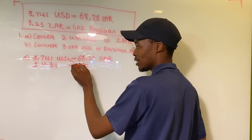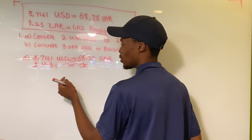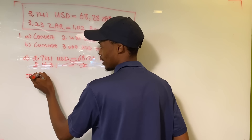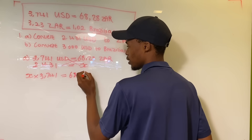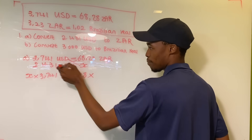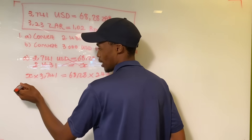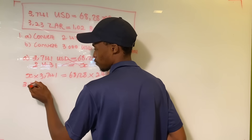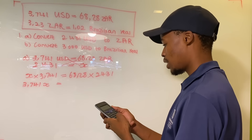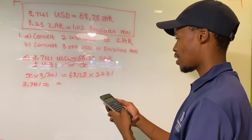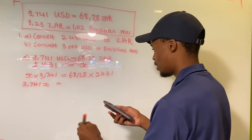From here we use the cross multiplication method — multiply this by that and that by this. So you're basically going to say: x multiplied by 3.741 USD equals 68.28 South African rands multiplied by 2431 USD. Now you do your calculations: that gives us 3.741x equals — we take this on the calculator — 68.28 times 2431.